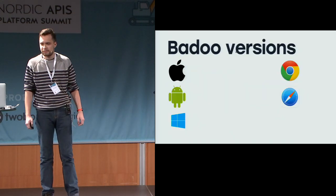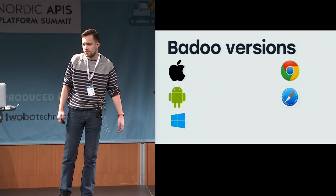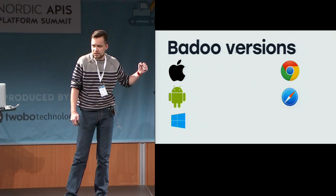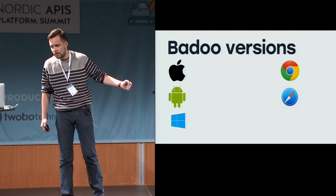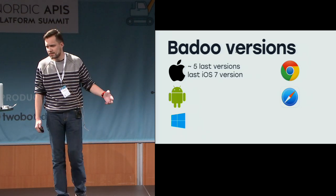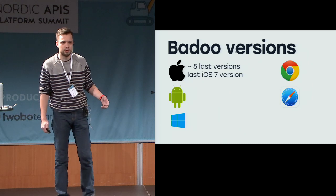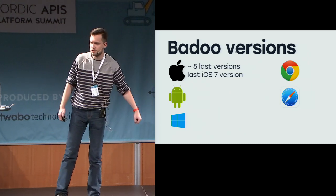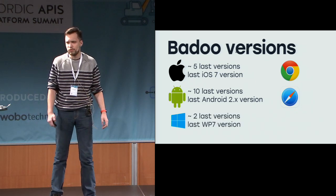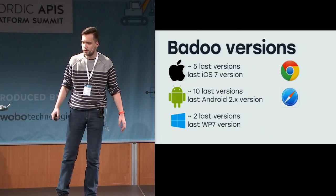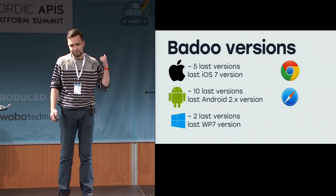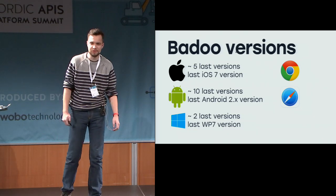We have five clients to this API — iOS, Android, Windows Phone, web, and mobile web. But not really just five clients, because it's also the last several versions for each. It's like the five last versions for iOS, and also the old, old version that still works on iOS 7. Ten last versions for Android, and still something works on 2.x. Just a couple of versions for Windows Phone — because Windows Phone. But we do have a working Windows Phone 7 version, which is nice.